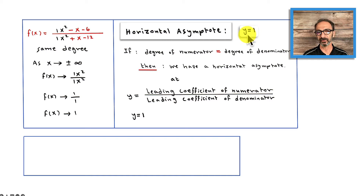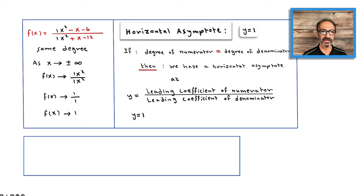So the graph is going to be raised up one unit instead of having the horizontal asymptote on the x-axis. Usually it's on the x-axis, but in this case it's going to be up to the level y equals 1.